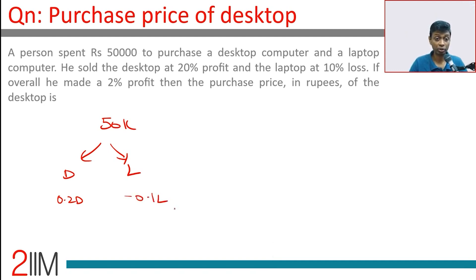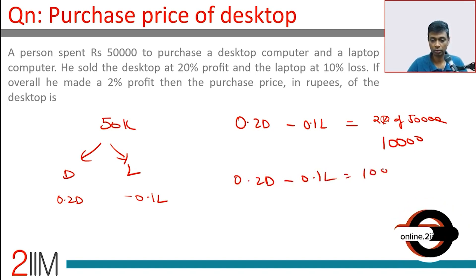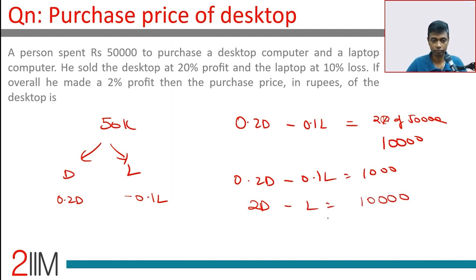Overall he made a 2% profit. So 0.2d minus 0.1l equals 2% of 50,000, which is 1,000. That simplifies to 2d minus l equals 10,000. We also know d plus l equals 50,000.